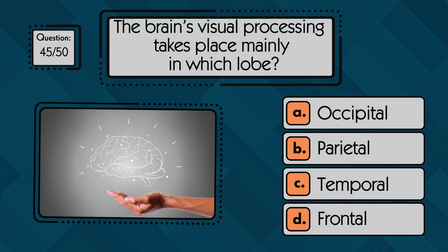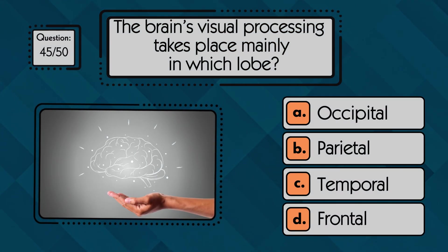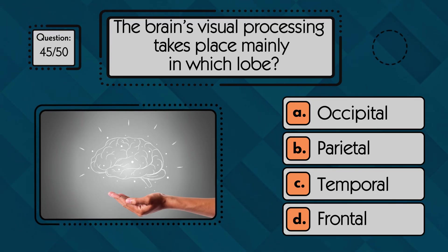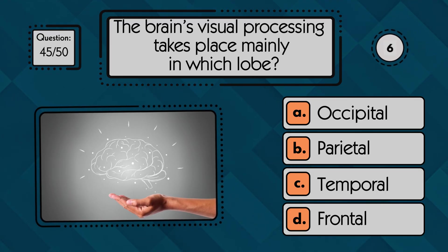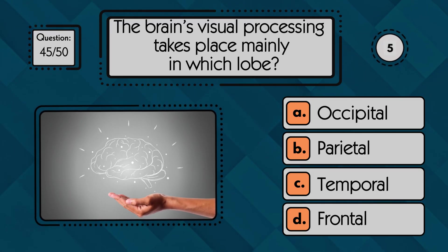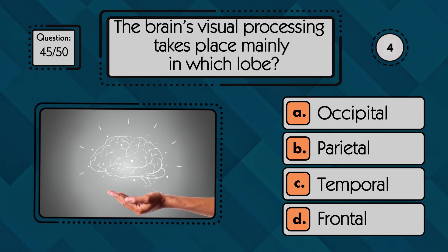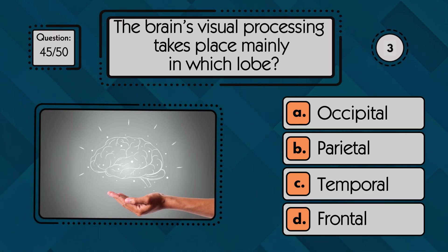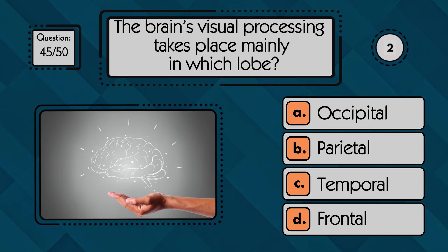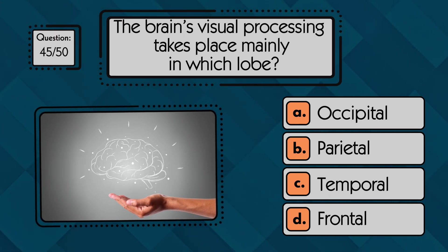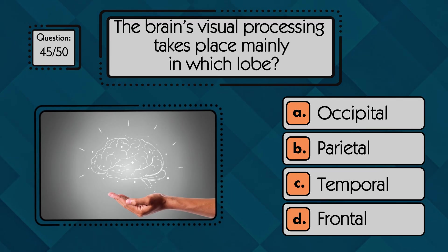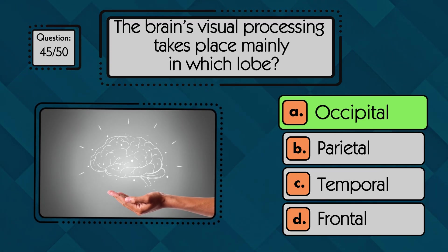The brain's visual processing takes place mainly in which lobe? Visual information is processed mainly in the occipital lobe.